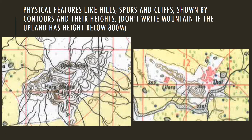Now let's look at physical features like hills and cliffs, shown by contour lines and their height. Here we can see a hill that is 364 meters high. Remember, do not write 'mountain' unless it is above 800 meters — preferably 800 meters and above is considered a mountain. So write 'hill' here. This extended part is a spur.